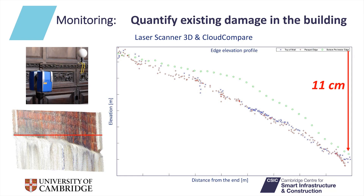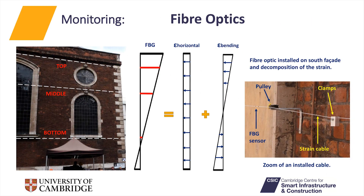Another factor influencing the response of the building is the existing damage. Laser scanning provides the 3D geometry of the building and allows us to define the past settlement and past tilt the building has suffered due to previous underground construction. This plot shows an 11 cm settlement in the northeast corner of the east facade due to the construction of the adjoining building.